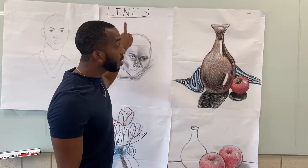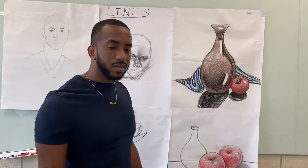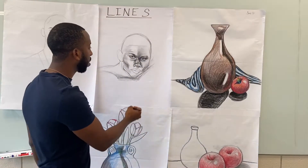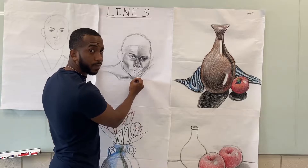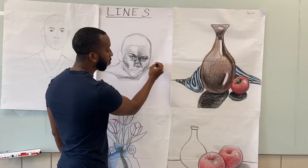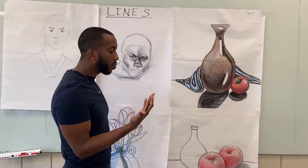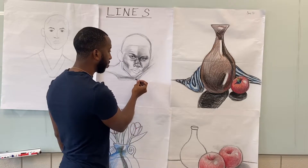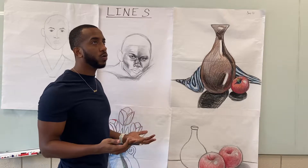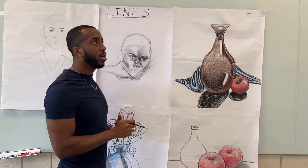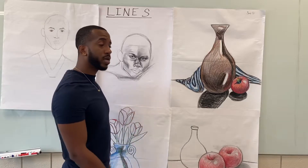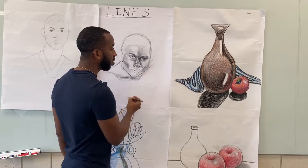So what a line is is very simple. A line is just starting at one point and moving to another point. It's basically like taking your pencil, your paintbrush, your marker, your graphite, your charcoal — whatever you're using to draw with — and moving from one place to another.